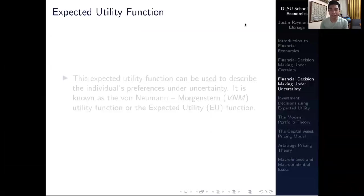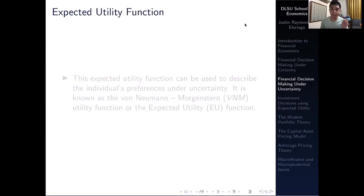Hi everyone, and welcome to our discussion on the expected utility theorem, part of our overall module on financial decision making under uncertainty. In the last video we tackled the axioms of consumer behavior in the context of expected utility, and we said that for as long as all of those axioms are met we can derive a function, and this function would generally exist. Let's talk a bit more on that and head into our discussion on the expected utility theorem.